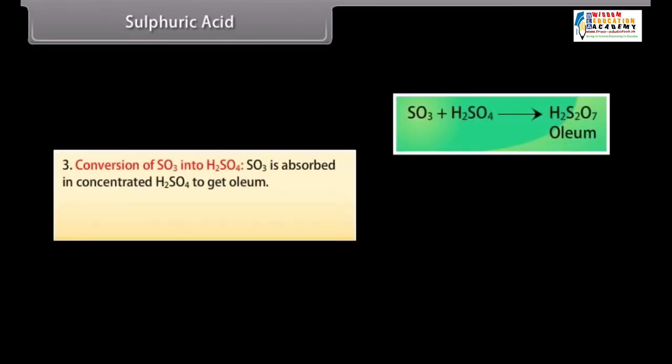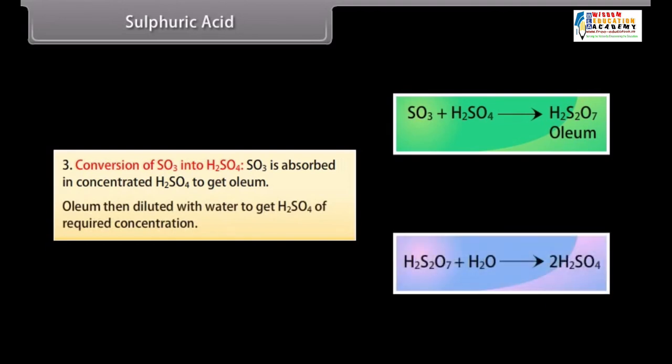Conversion of SO3 into H2SO4. SO3 is absorbed in concentrated H2SO4 to get oleum. Oleum then is diluted with water to get H2SO4 of required concentration.